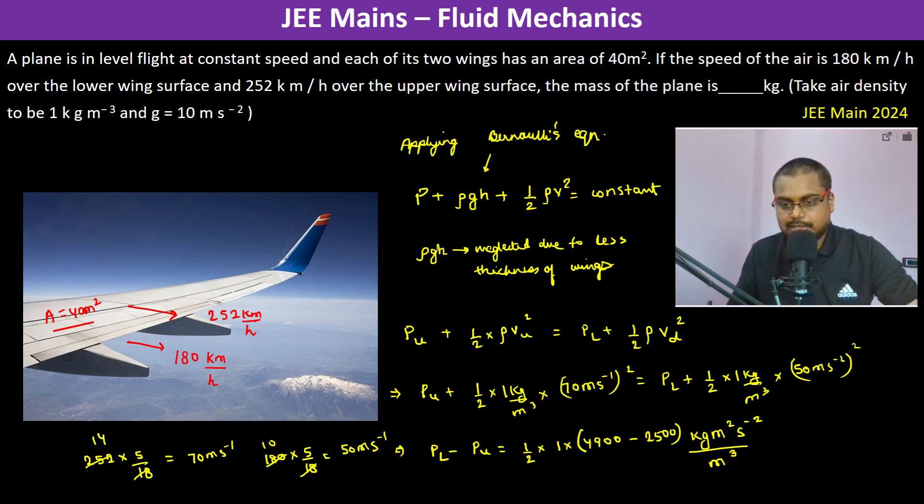This is kg meter per second square divided by meter cube. So basically, this is newton per meter square. So this is actually 2400 divided by 2. This is 1200 newton per meter square.